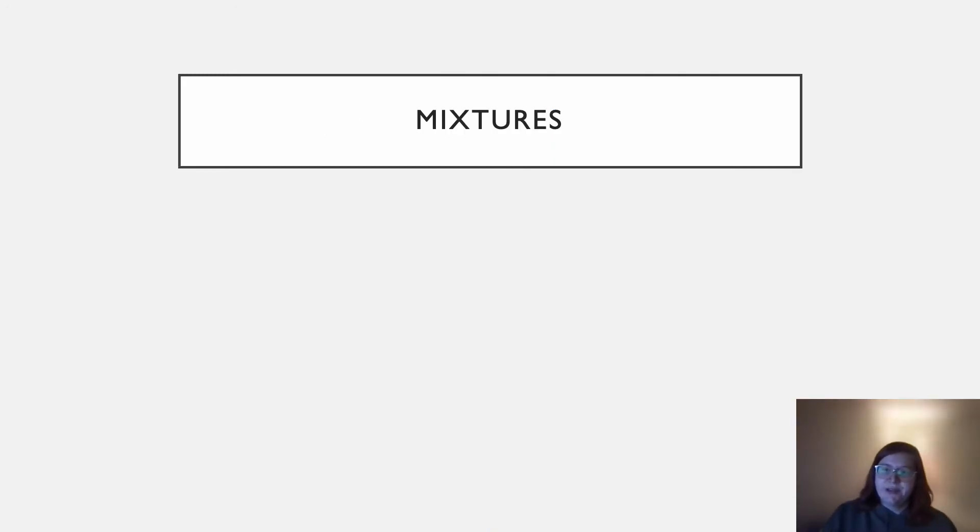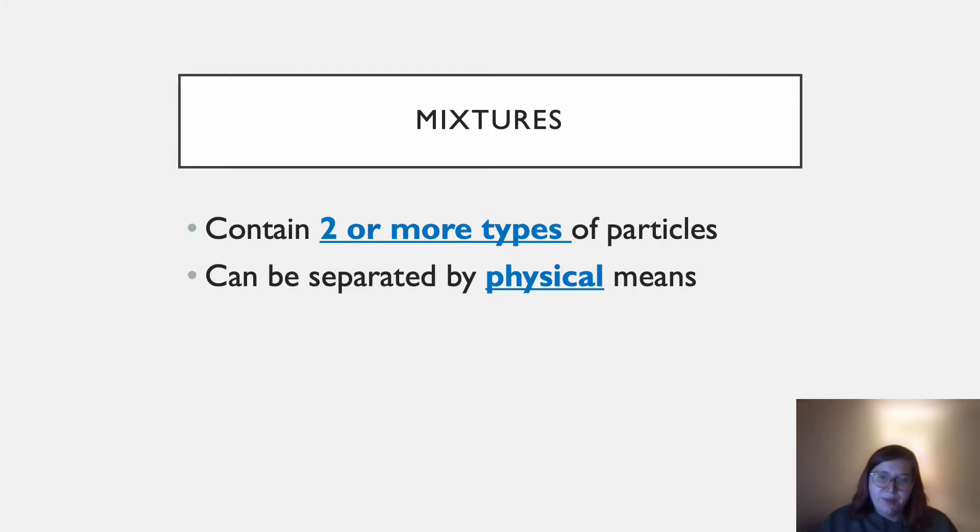Okay, so for mixtures, mixtures contain two or more types of particles. And these can be separated by physical means. So we can do things like pull these apart. We can evaporate the liquid out of something to get something that's left behind. Those are all physical ways of separating.